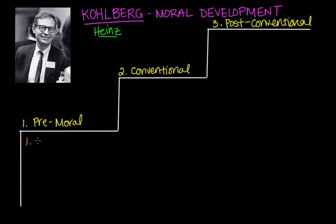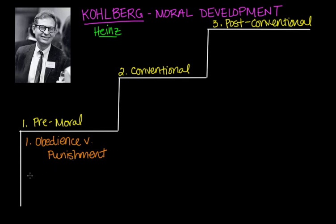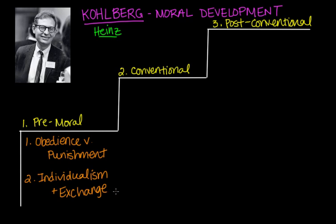The first stage of the pre-conventional level is obedience versus punishment. At this basic level, authority is outside the individual and reasoning is based on the physical consequences of actions. Children see rules as fixed and absolute — obeying the rules is a means to avoid punishment. If the child is good, they avoid being punished; if they are punished, that means they must have done something wrong. The second stage is called individualism and exchange. Here, children recognize there is not just one right view handed down by authorities, and they start to understand that different individuals have different viewpoints.